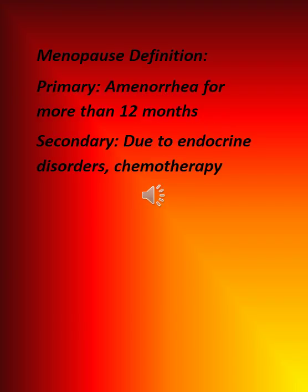Definition of menopause. Primary menopause is defined by amenorrhea for more than 12 months. Secondary menopause may be due to endocrine disorders or chemotherapy.